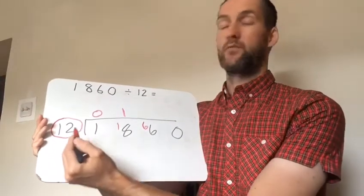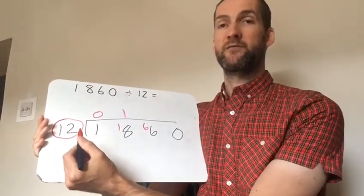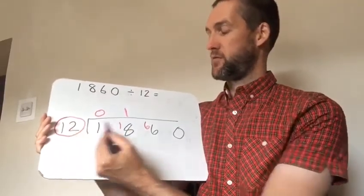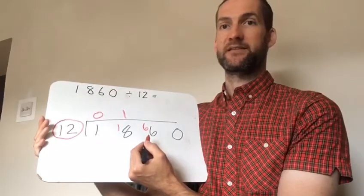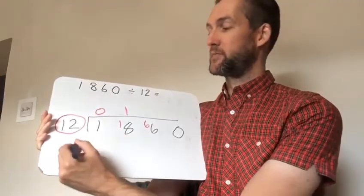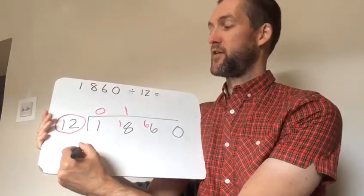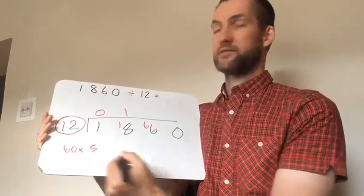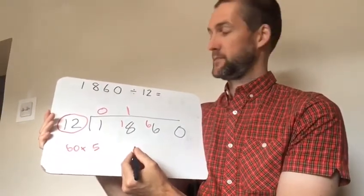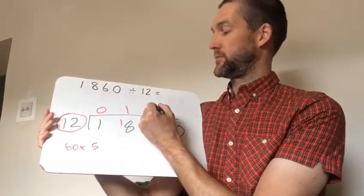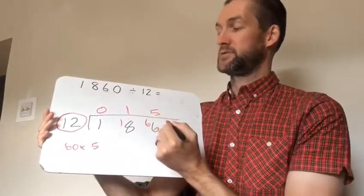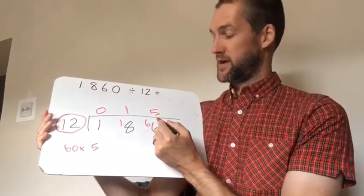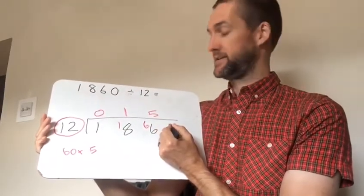Now sometimes we may need to use multiplication facts to help us out. We need to think, well how many times does 12 go into 66? And now in our 12 times table, we know that 5 lots of 12 are 60. So how many times does 12 go into 66? Well that goes into it 5 times and then we have remaining 6.